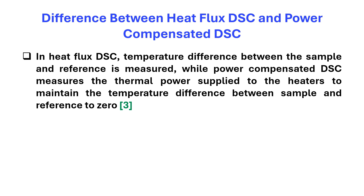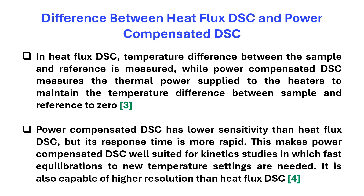In heat flux DSC, the temperature difference between the sample and reference is measured, while power compensated DSC measures the thermal power supplied to the heaters to maintain the temperature difference between sample and reference at zero. Power compensated DSC has lower sensitivity than heat flux DSC, but its response time is more rapid. This makes power compensated DSC well suited for kinetics studies in which fast equilibration to new temperature settings is needed. It is also capable of higher resolution than heat flux DSC.